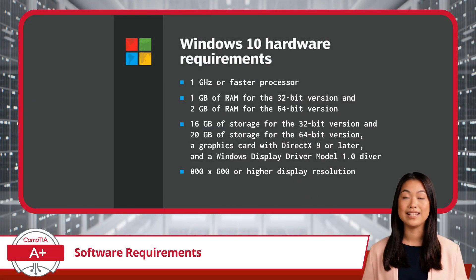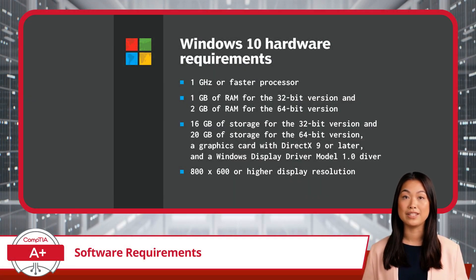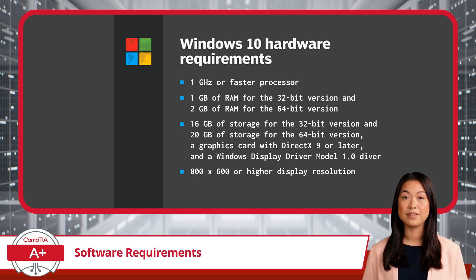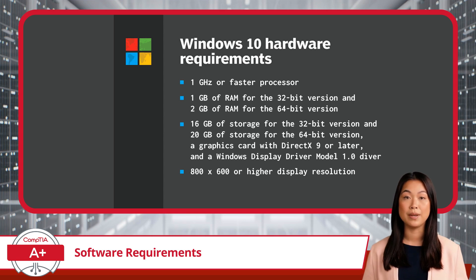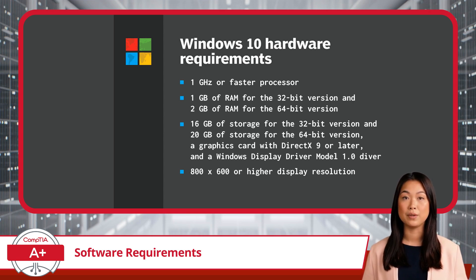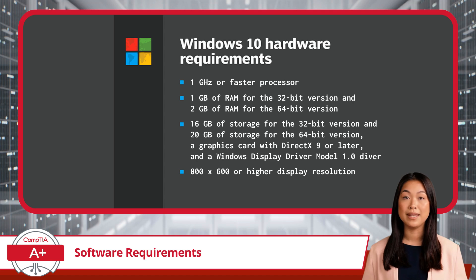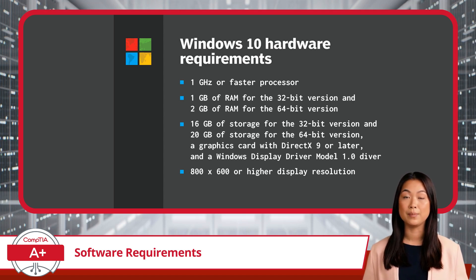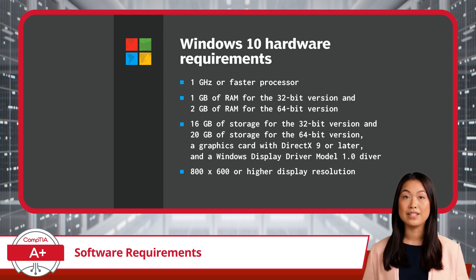Once you get past the HCL, you will also find that software installations come with some minimum hardware requirements too. For example, the Windows 10 operating system has specific hardware requirements that must be met to ensure smooth operation. These requirements serve as a baseline to ensure that the operating system can perform basic functions effectively. To install and run Windows 10, your system must meet the following minimum hardware specifications.